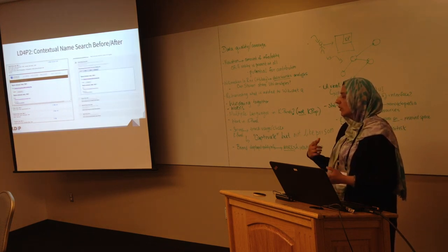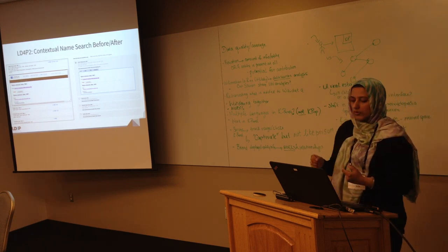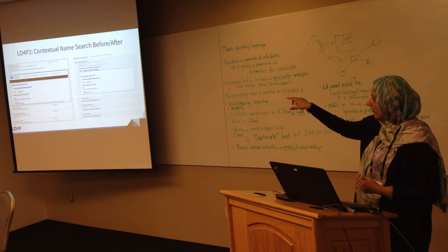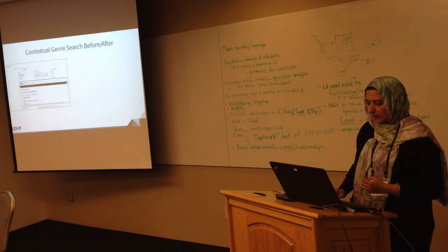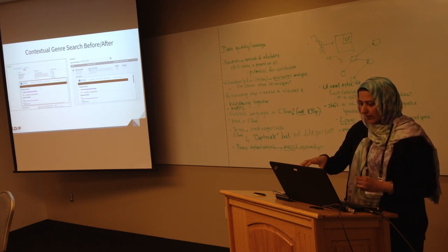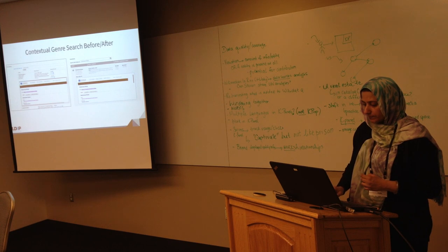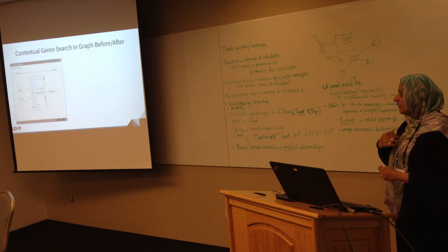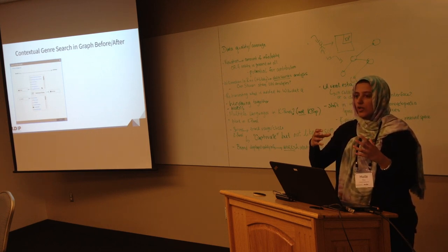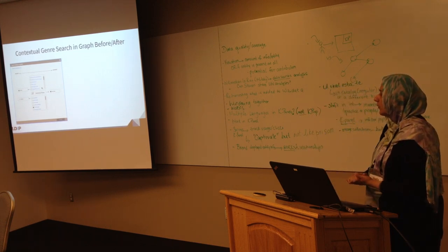These are some before-and-after shots. As we evaluated this with catalogers, they said things like: this is useful, but I'd really like to know more clearly which sources you use. So we made sure that sources are identified much more clearly in the interface. You can see the broader and narrower relationships, and at the bottom you're looking specifically at the genre form record from the Library of Congress.